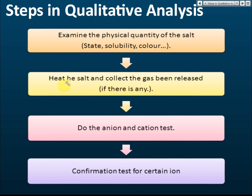We also examine its solubility and color. The second step is to heat the salt to collect the gas. After that, we do the anion and cation test — the negative and positive ion tests. Today we discuss the anion test first; next week we will discuss the cation test. The last step is the confirmation test — for example, if we believe there is iron(II) in the substance, we do a confirmation test to confirm the presence of that ion.